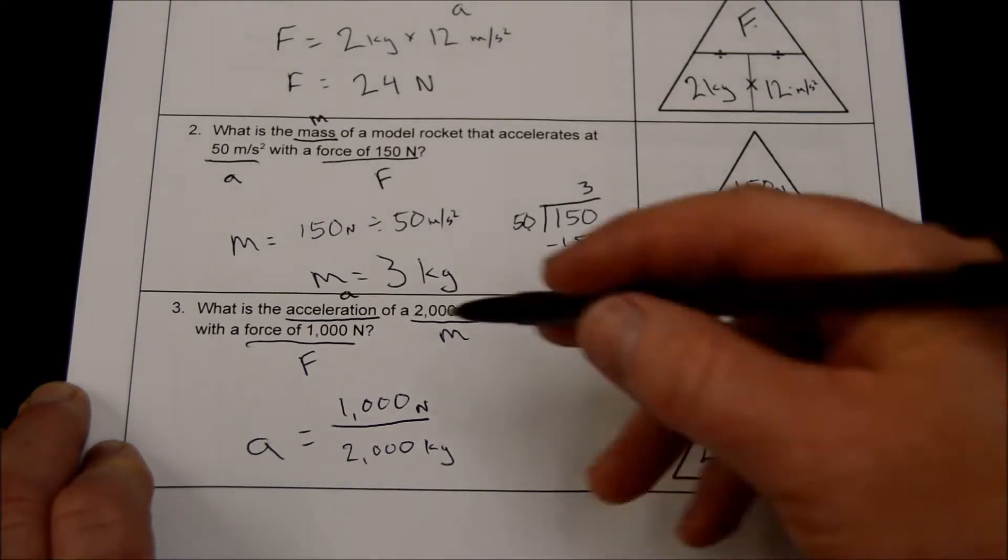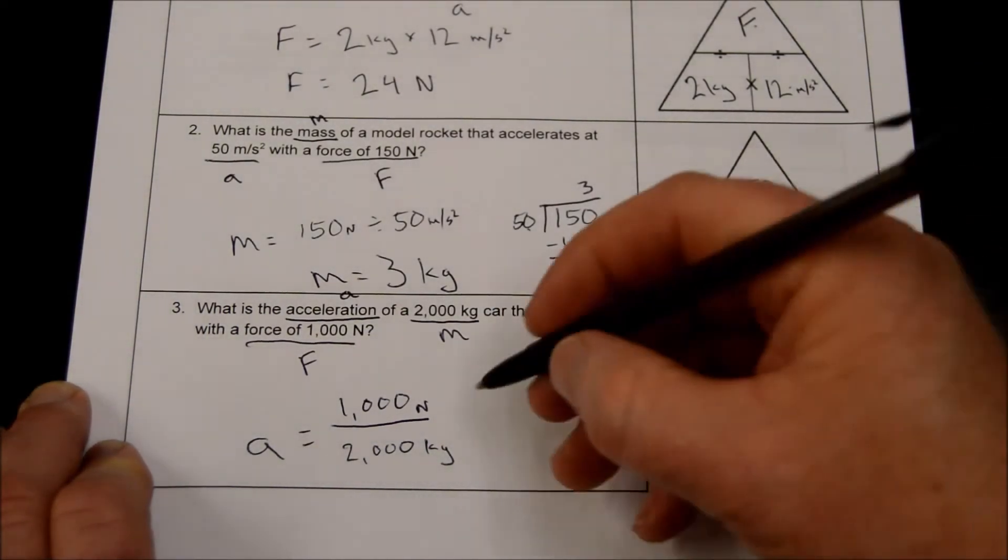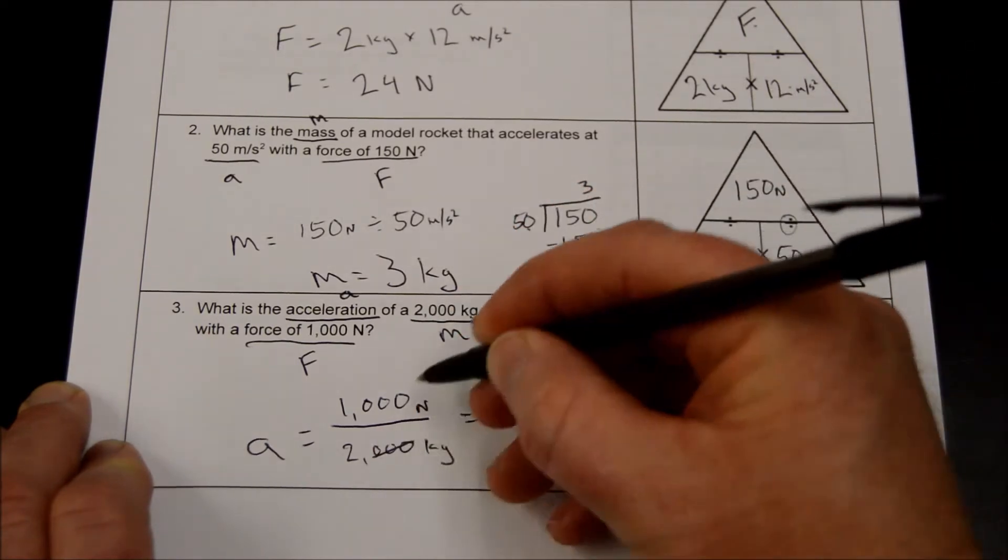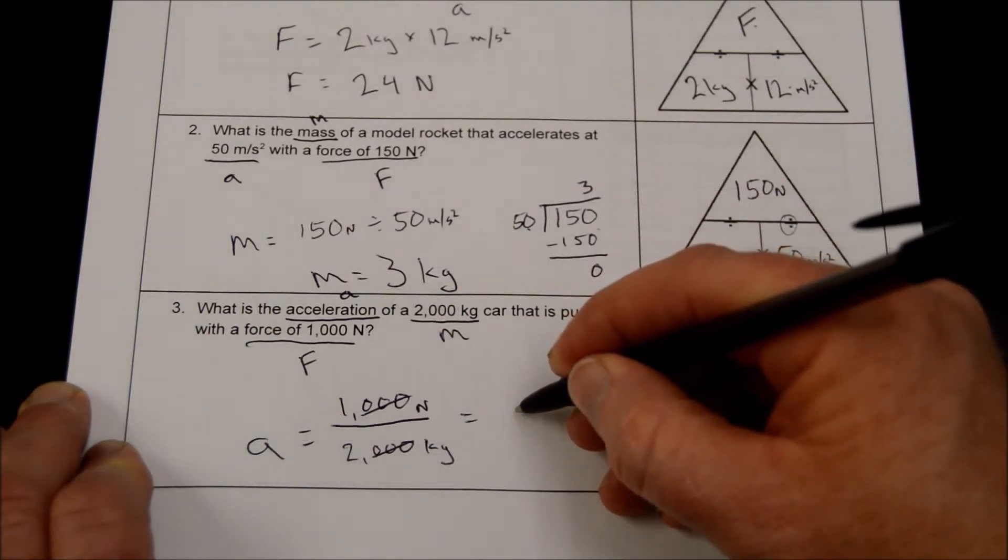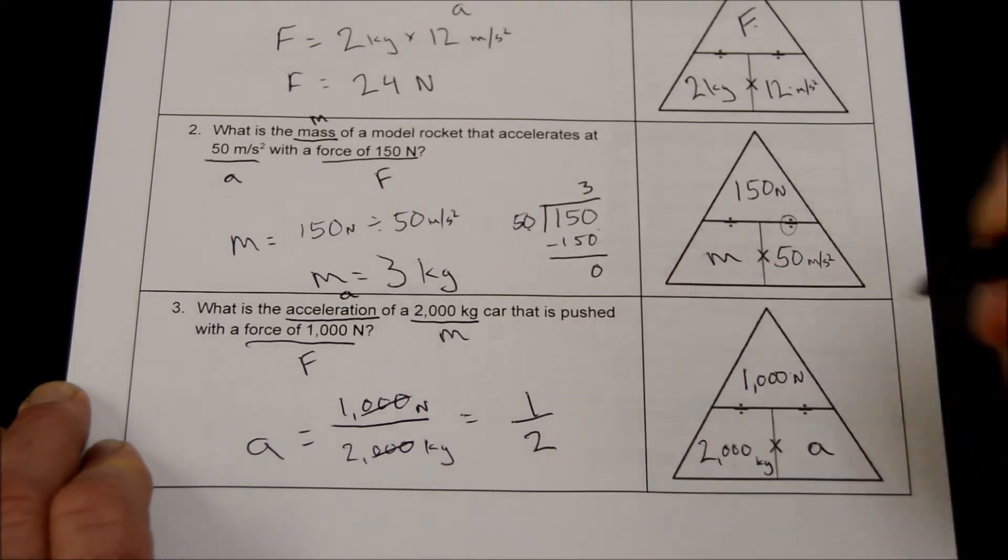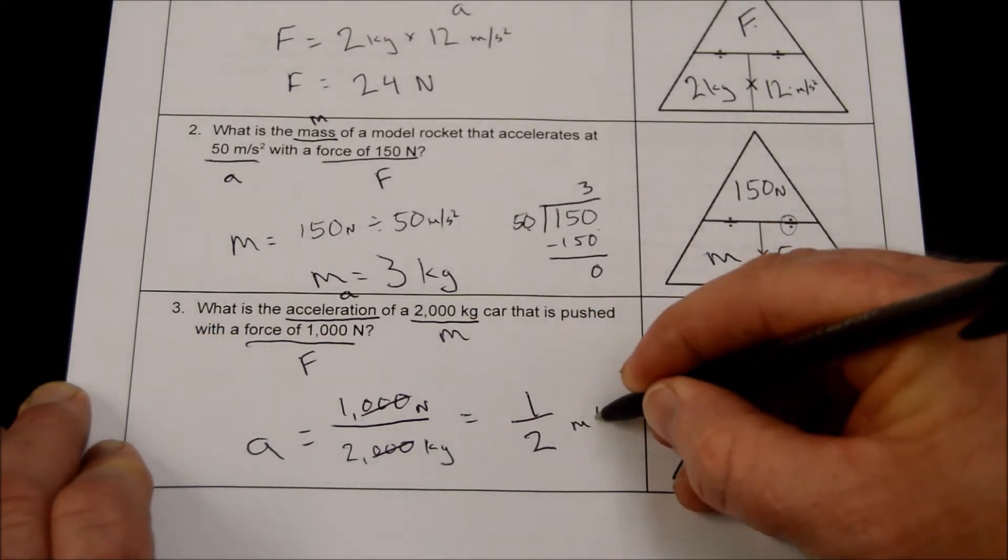This one, instead of doing this ugly division, let's just simplify our fraction. Look at this. You can cross out your zeros, and your acceleration is equal to 1 half meter per second squared.